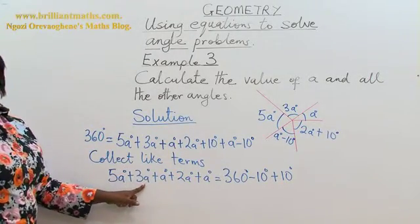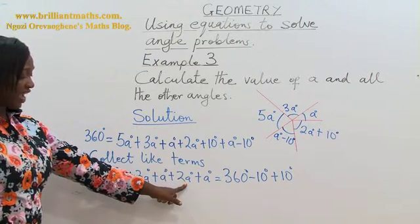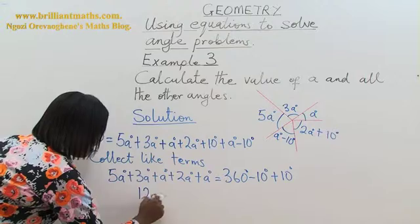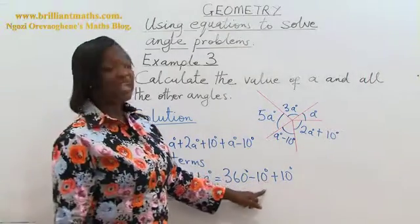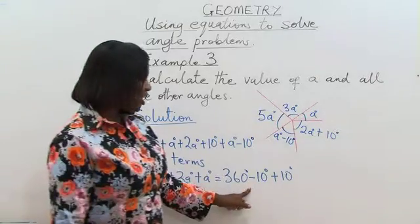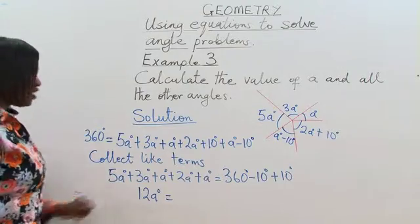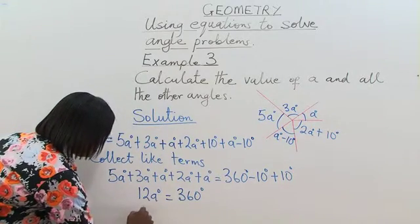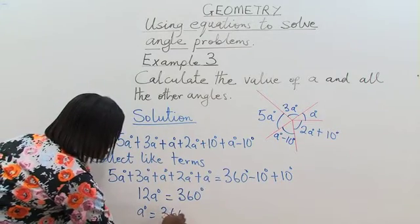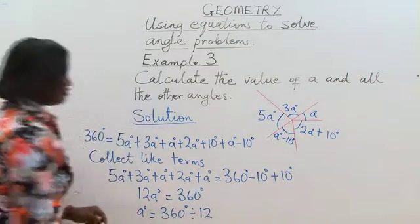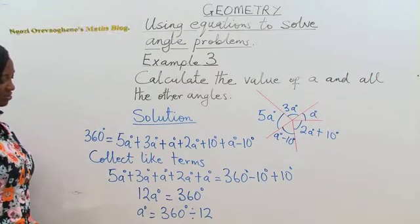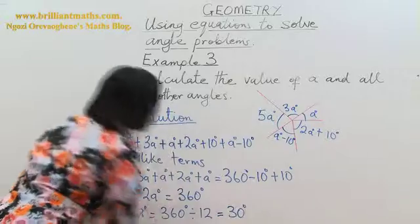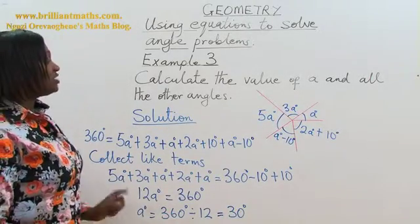5a plus 3a is 8, 8 plus 2 is 10, 10 plus 1 is 11, plus 1 is 12. So I have 12a is equal to 360, take away 10 is 350, and 350 plus 10 is 360. So 12a is equal to 360 degrees. So the value of a is equal to 360 degrees divided by 12. 12 in 36 is 3. So 12 in 360 is equal to 30 degrees. So that means that the value of a is 30 degrees.